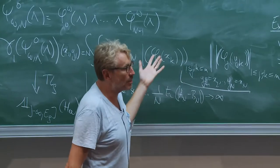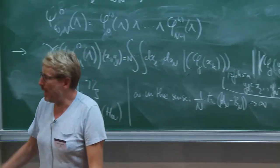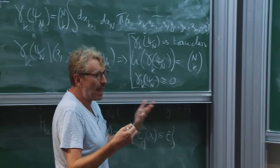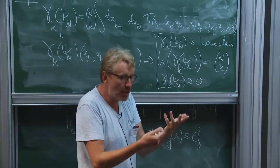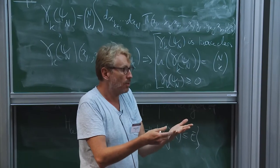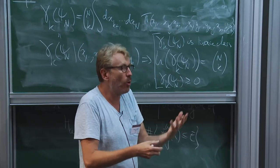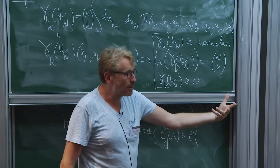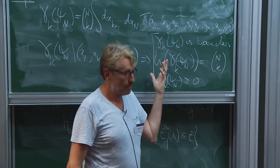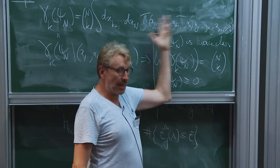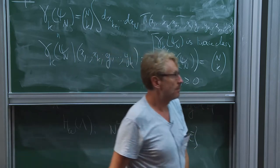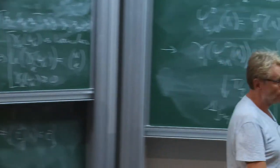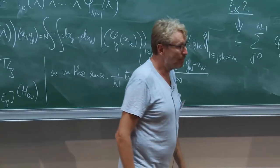Another way to look at it: if the state giving rise to this is pure in the sense that it's exactly of Slater determinant type, then what you obtain is that you get exactly all the k-groups — all the ways you can group k particles together. This is exactly what's coming out from this computation.